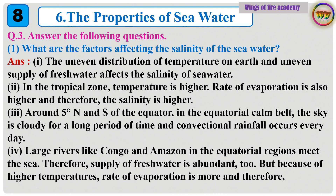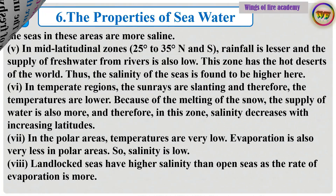But because of higher temperatures, rate of evaporation is more, and therefore the seas in these areas are more saline. In mid-latitudinal zones, 25 degrees to 35 degrees N and S, rainfall is lesser and the supply of fresh water from rivers is also low. This zone has the hot deserts of the world. Thus, the salinity of the seas is found to be higher here.